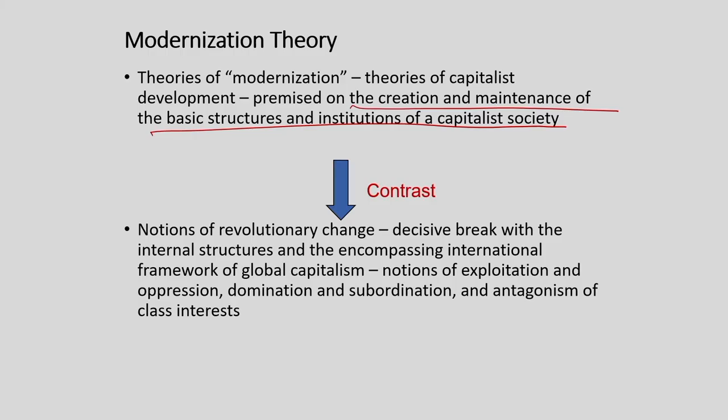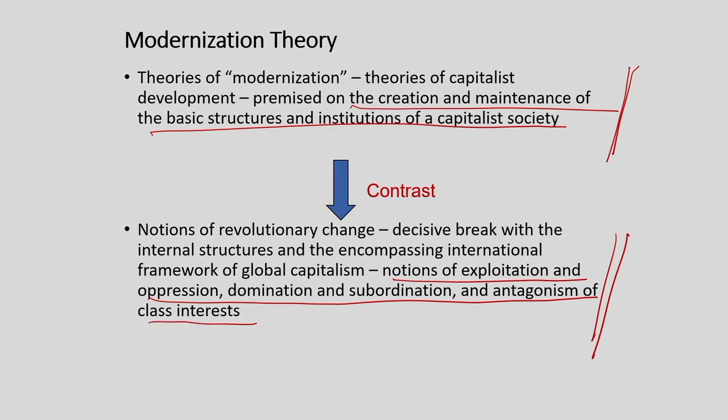If the modernization theory represents capitalist theory of development, then Marxist theory of development represents socialist theory of development. Theories of capitalist development are premised upon the creation and maintenance of basic structures and institutions of a capitalist society, whereas Marxist or socialist theory of development is based on notions of exploitation and oppression, domination and subordination, and antagonism of class interests.